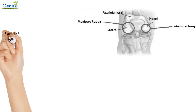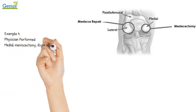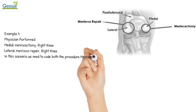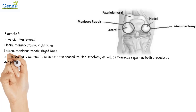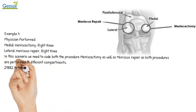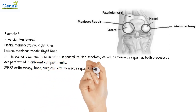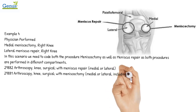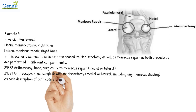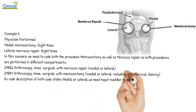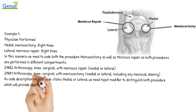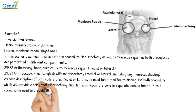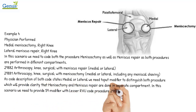Example 4: A physician performed medial meniscectomy of the right knee and lateral meniscus repair of the right knee. In this scenario, we need to code both procedures — meniscectomy and meniscus repair — since they are performed in different compartments. CPT code 29882 covers arthroscopy, knee surgical, with meniscus repair (medial or lateral), and CPT code 29881 covers arthroscopy, knee surgical, with meniscectomy (medial or lateral), including any meniscal shaving. Since both code descriptions state 'medial or lateral,' we need a modifier to distinguish the two procedures and clarify that meniscectomy and meniscus repair are done in separate compartments. We report modifier 59 with the lesser RVU code 29881. The final coding is: 29882-RT and 29881-59-RT.